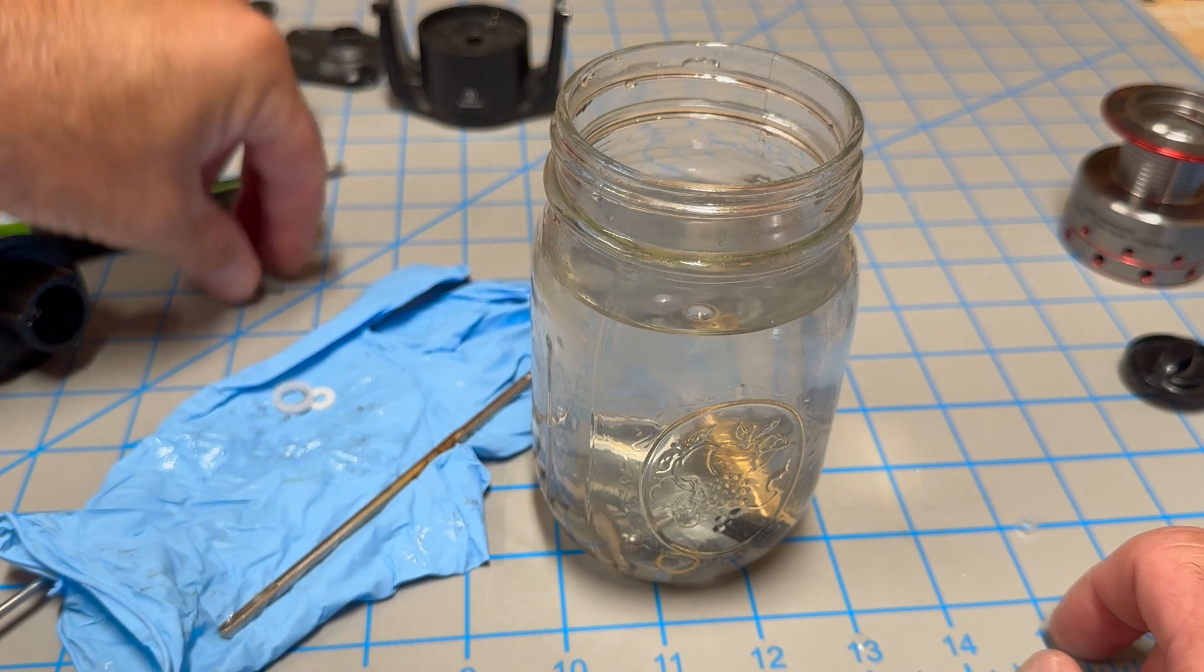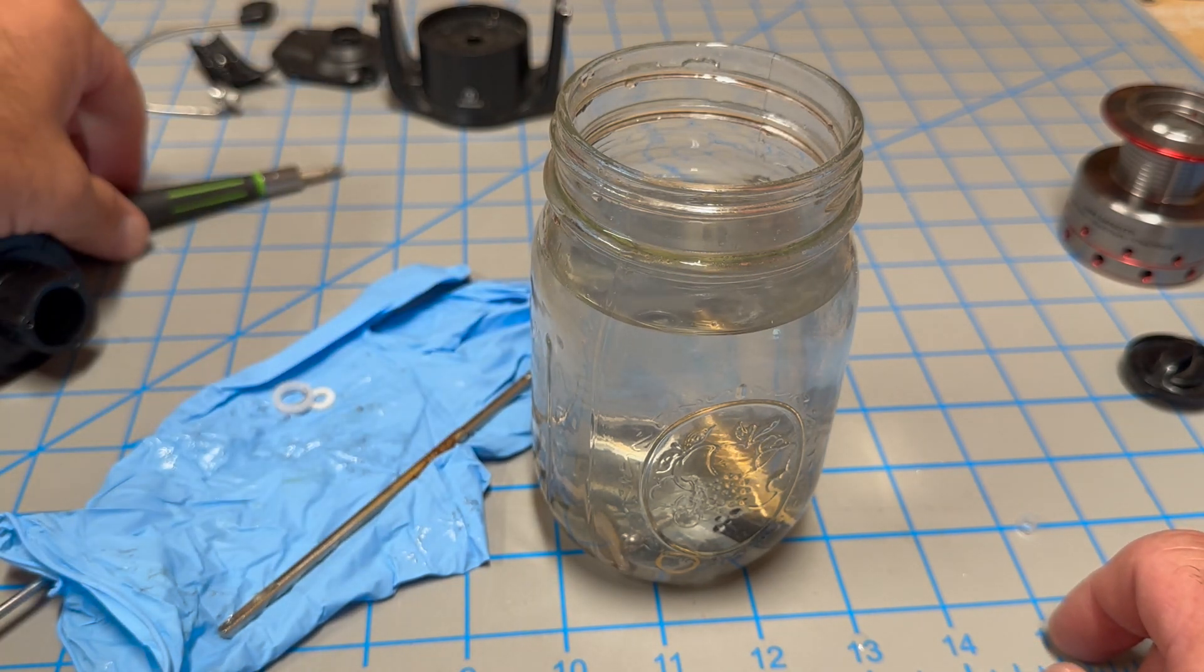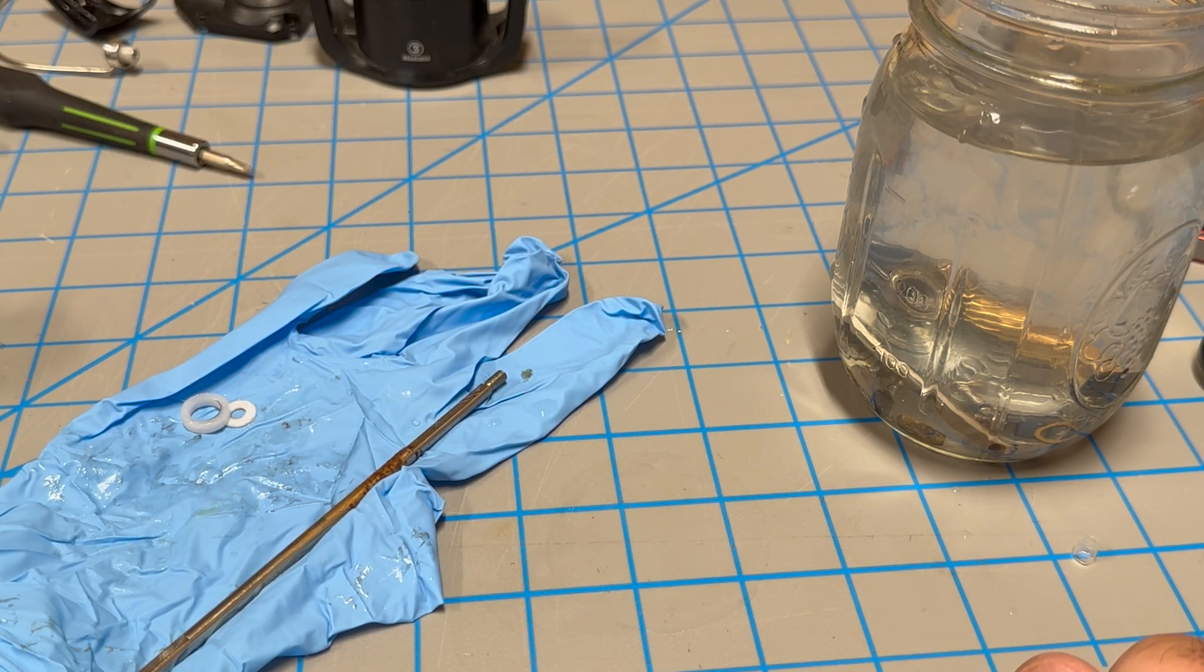Just dropping the remainder of the little screws in here. Because if any of those were to rust out, that could cause a problem in the reel. All right, we'll come back and check our parts in a few days.